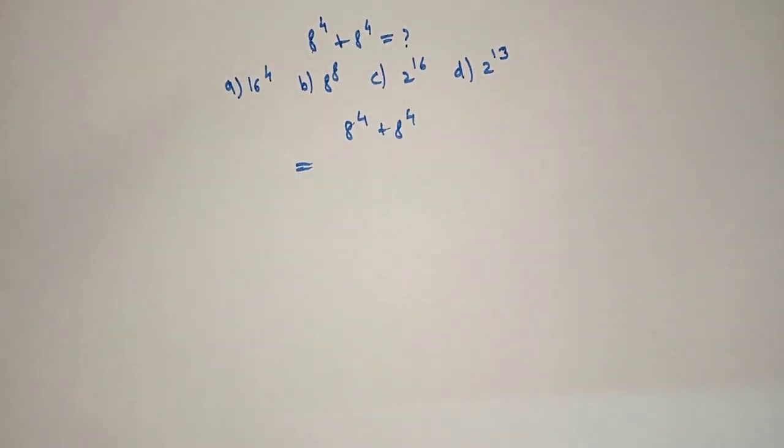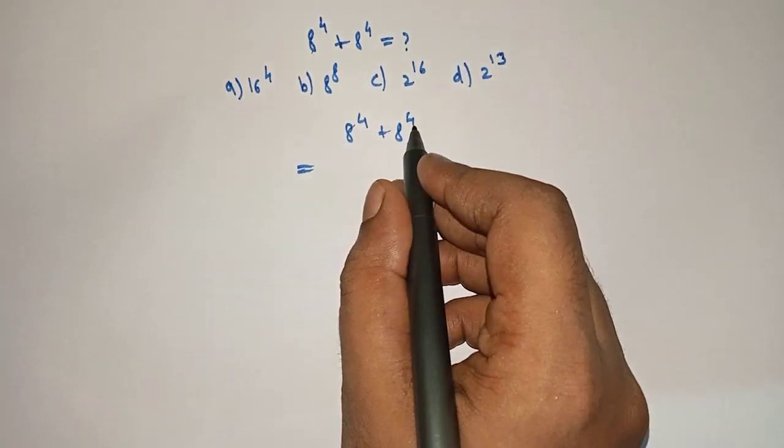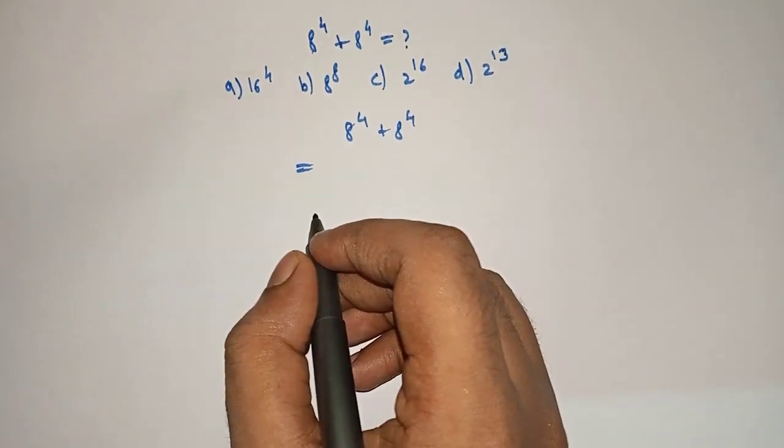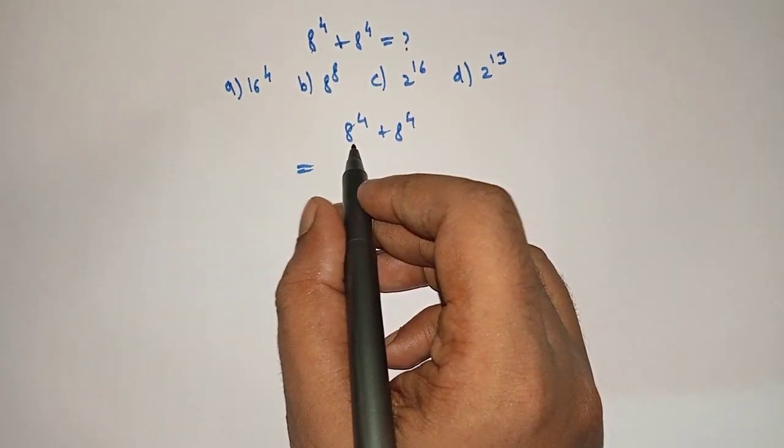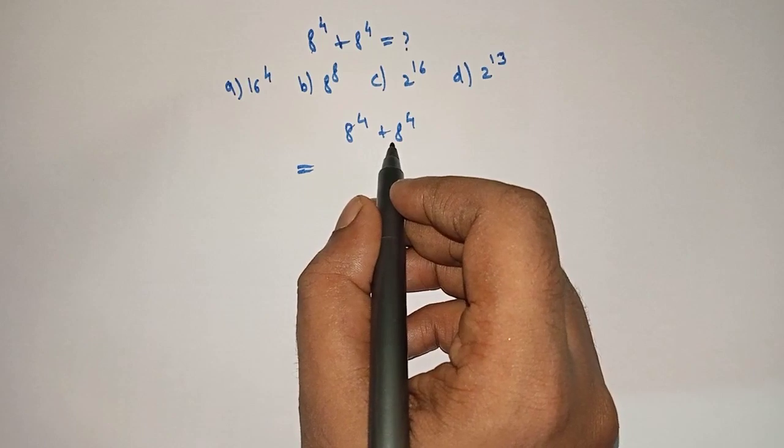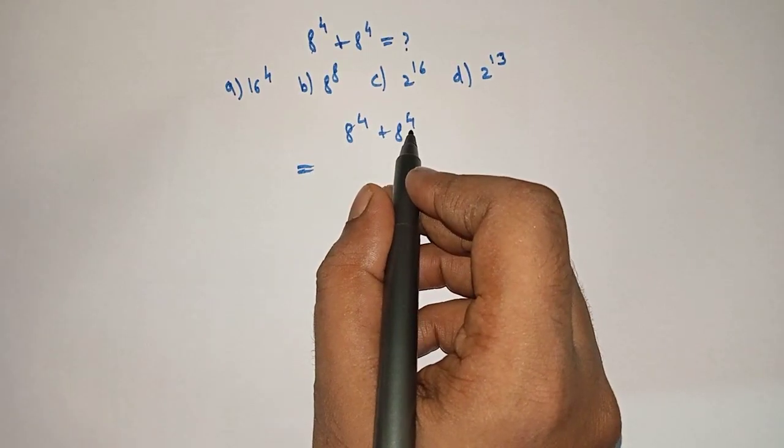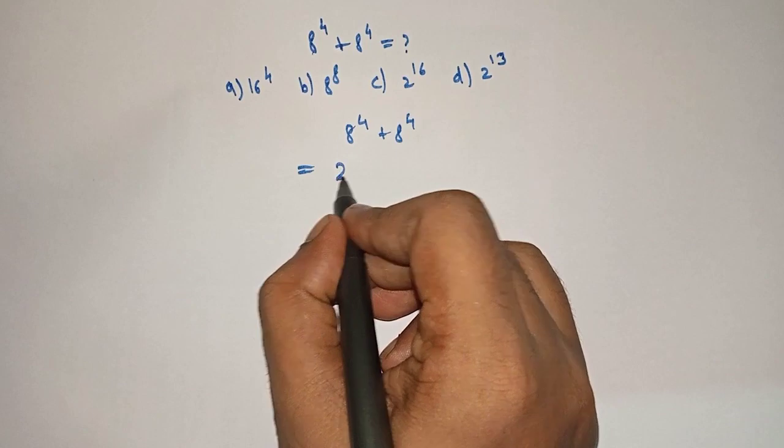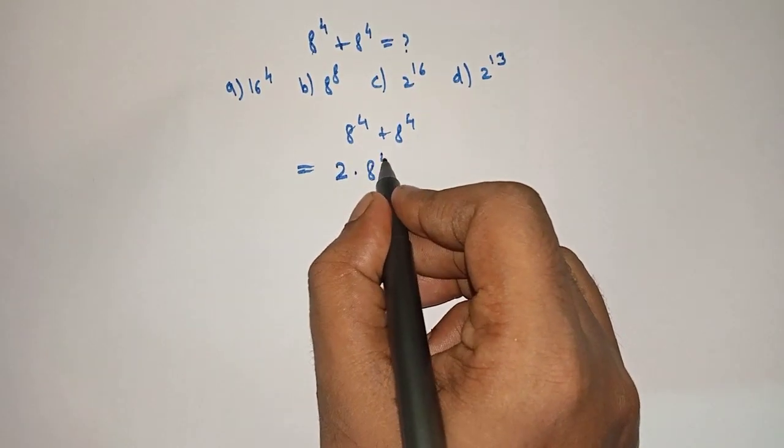So, let's solve. 8 raised to 4 plus 8 raised to 4. Since 8 raised to 4 appears 2 times, we can write 2 into 8 raised to 4.